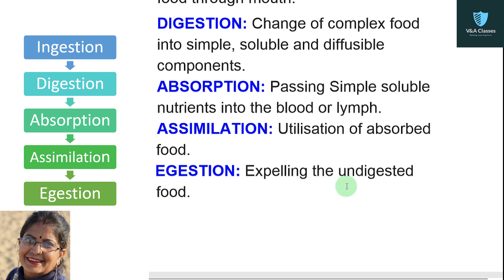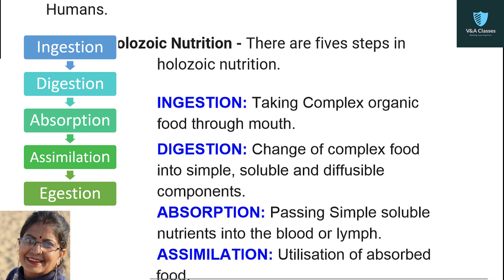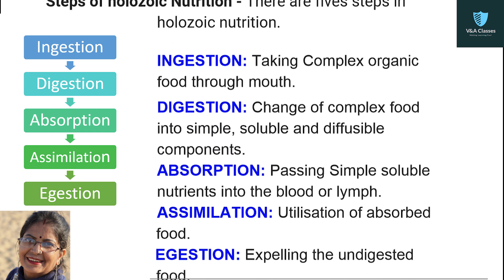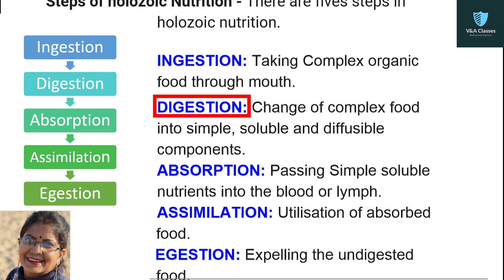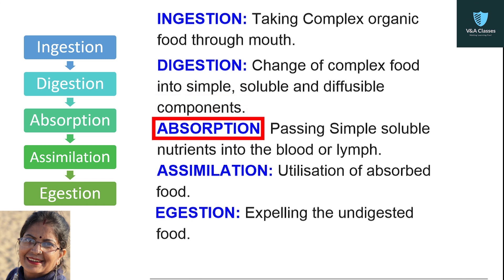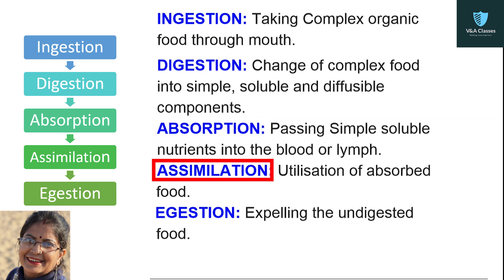Fifth and last is egestion: expelling the undigested food from the body. To summarize the five steps — ingestion means taking food into the mouth; digestion means converting it into small, simple components; absorption means passing those simple substances through blood and lymph; assimilation means utilizing the useful components; and egestion means expelling the waste material out of the body.